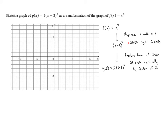These are the transformations we have to make to go from the graph of f of x equals x squared to g of x equals 2 times the quantity x minus 3 squared. I'm going to quickly sketch the graph of f of x equals x squared — a parabola opening upward with a vertex at the origin.